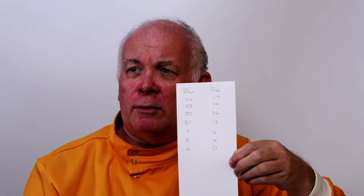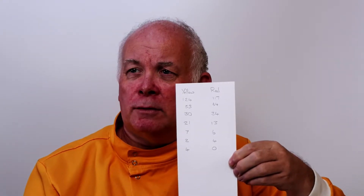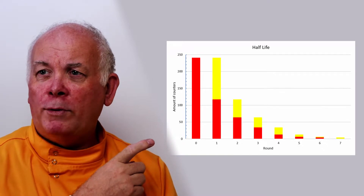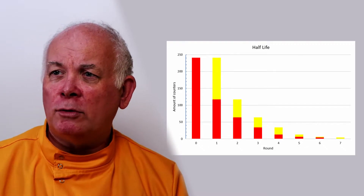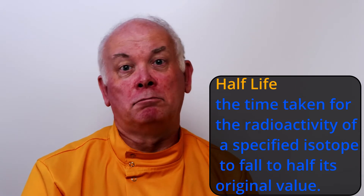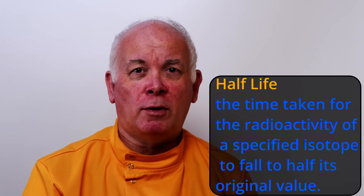Now we can draw a graph of this data. As we can see from the graph, what we've got is a half-life curve — an exponential decay going down from lots to fewer to fewer to fewer, making this classic curve shape. We can repeat this experiment over and over again and each time we'll get different numbers, but we'll get the same shape curve, which is the half-life curve — the time taken for half the counters, atoms, or anything to change from one thing to another.